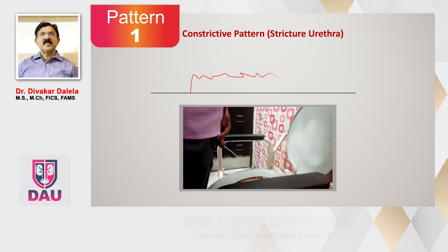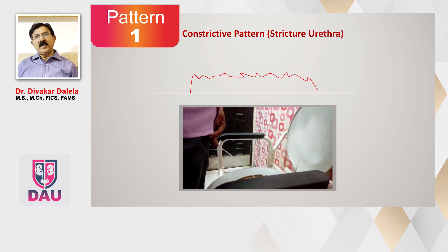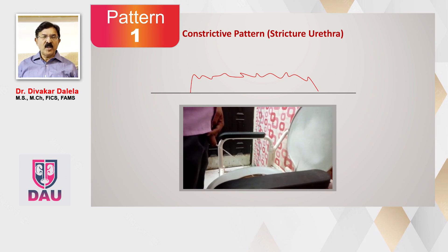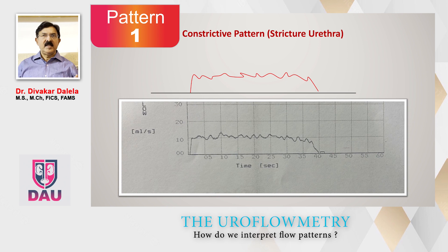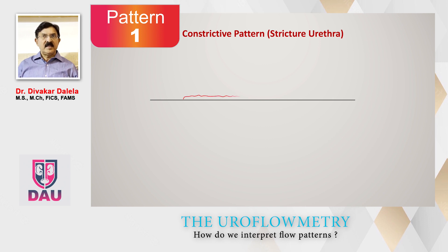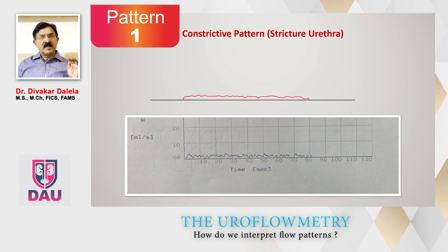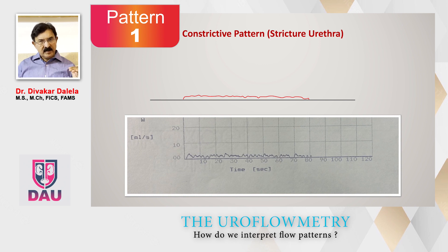There can be variations in this. Another patient may show a flat plateau on top — also a box pattern. The difference is the Qmax may be 10 instead of 5, but again there is a flat top. A flat top is indicative of a constrictive pattern, indicating the presence of a stiff urethra somewhere. The point is: don't just go by what the Qmax is — it can be 3, 4, 5, up to 10 — but what you must look for is a flat top for a duration of time.